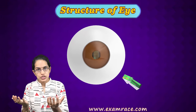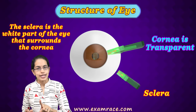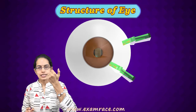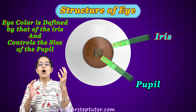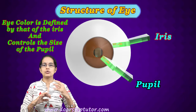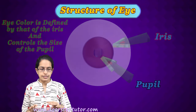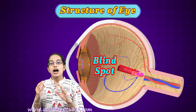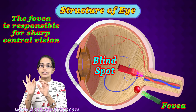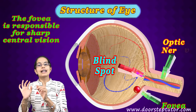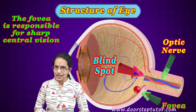A quick recap of the structure: the outermost layer is the sclera, a white tough coating. The front part of the sclera is transparent — that is the cornea. Inside the cornea we have two concentric rings: the innermost is the pupil, and outside the pupil is the iris, which gives the eye its color. We also have the blind spot, the fovea where the clearest vision occurs, and the optic nerve which converts the light signal into an electrical signal.